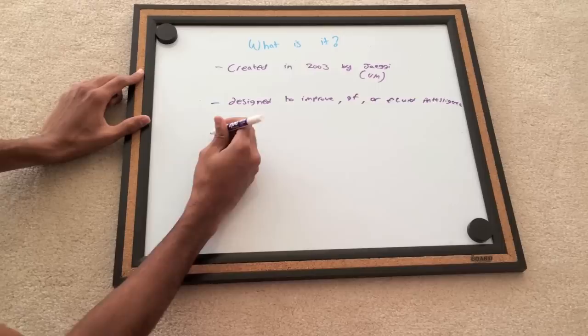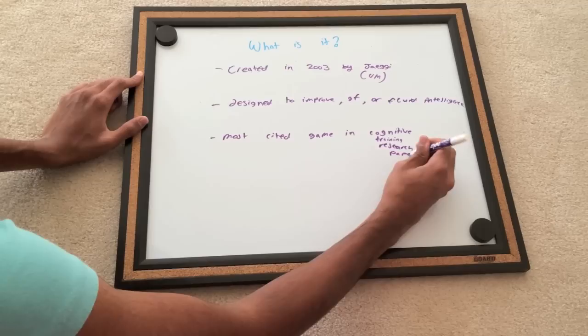It is designed to improve fluid intelligence, which we will talk about later, also indicated by the two letters G and F, and is the most cited game in cognitive training research papers.